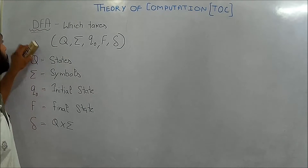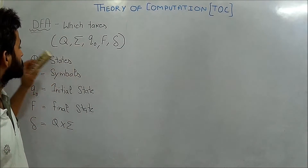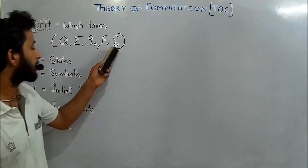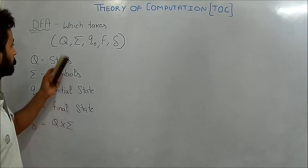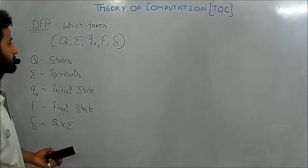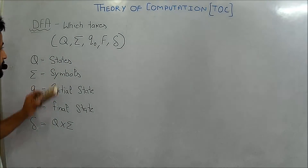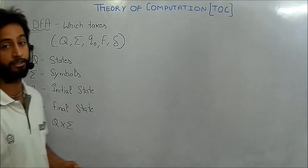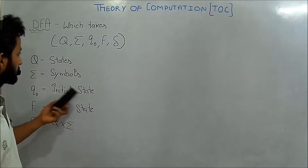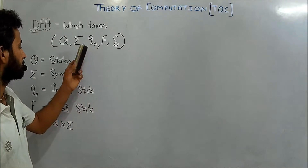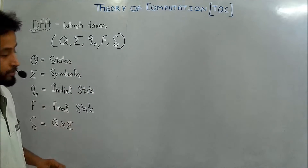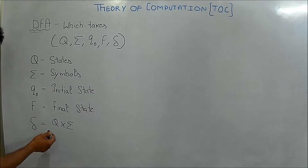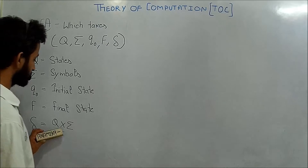Our topic now is DFA. A DFA takes Q, Sigma, Q naught, F, and a transition function. Q is the set of states. Sigma is the set of symbols (alphabets) given in our example. Q naught is the initial state — not a set, just the single initial state. F is the set of final states, and the transition function maps Q with Sigma.